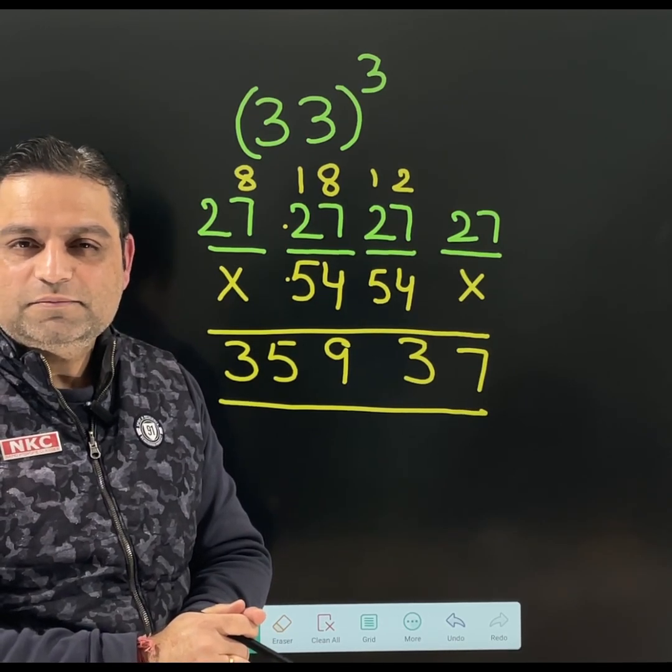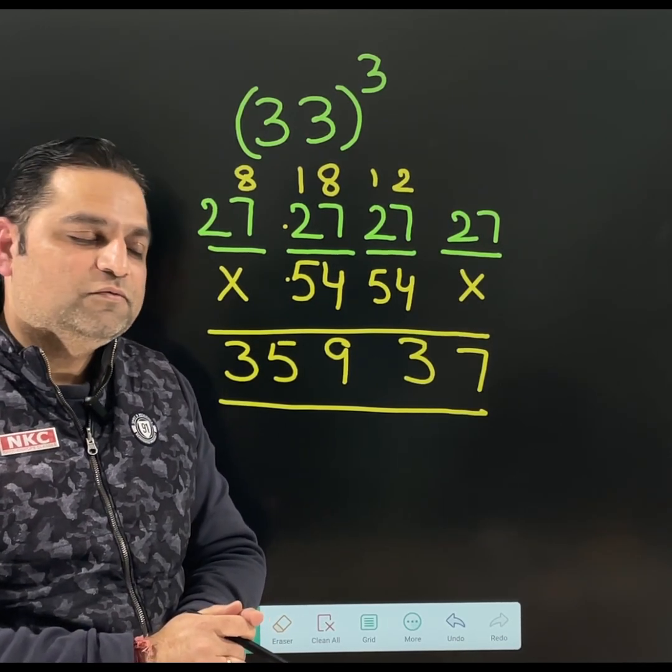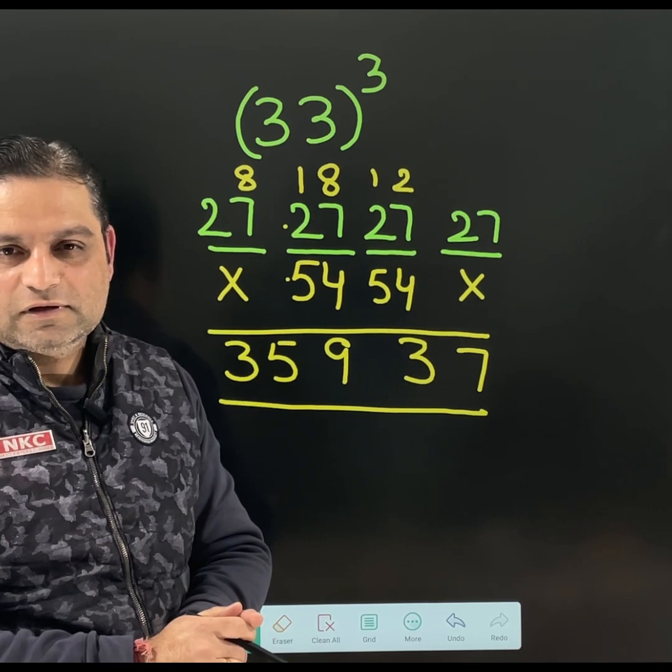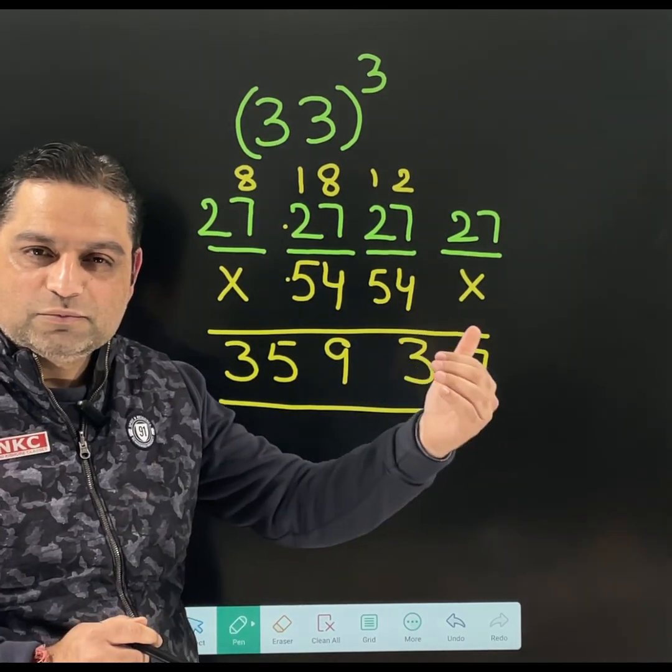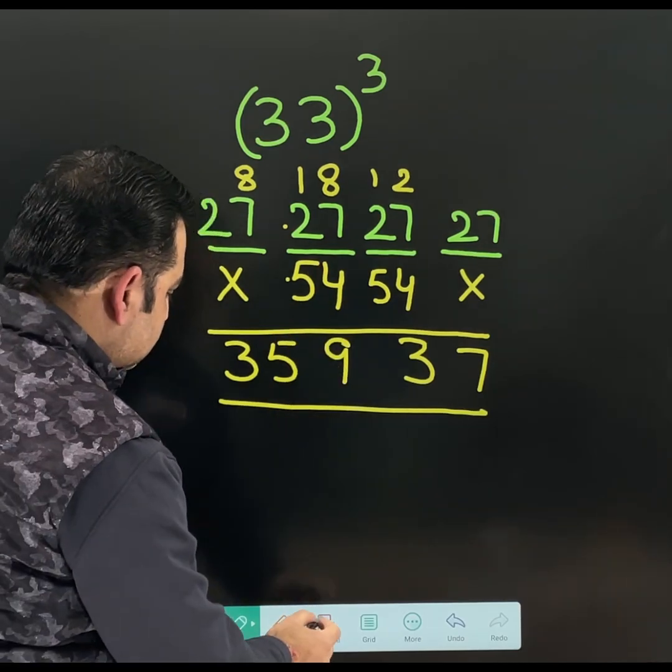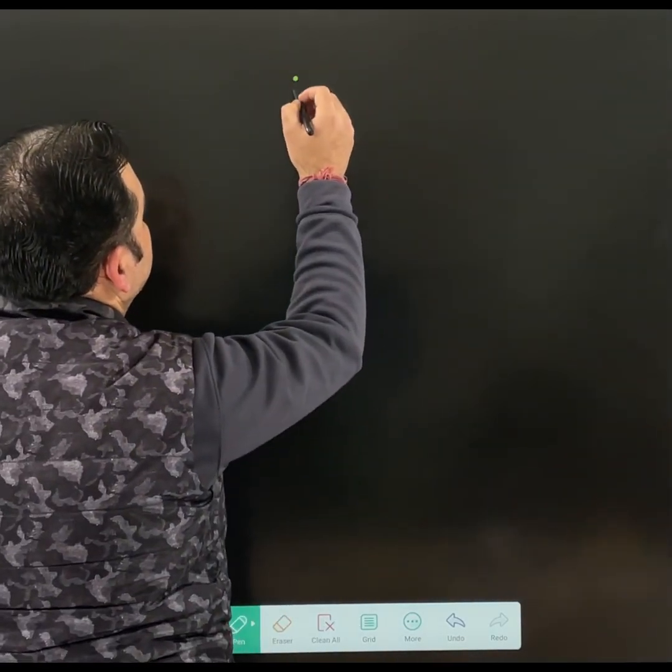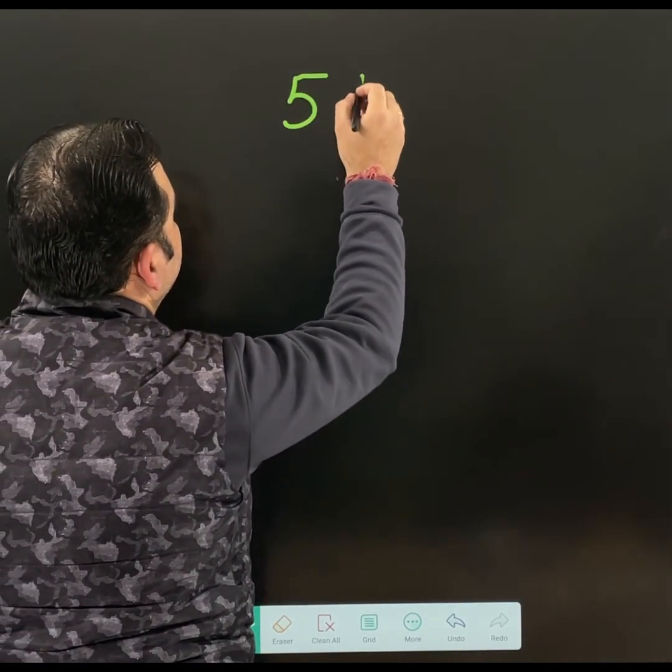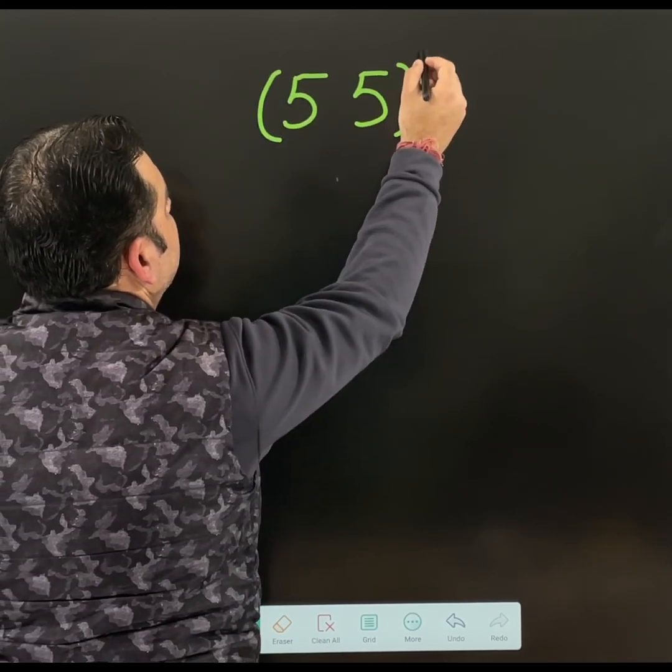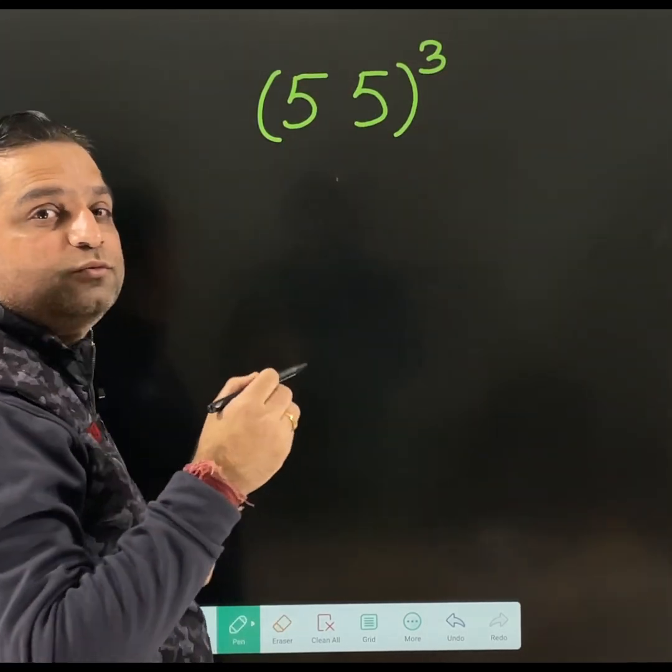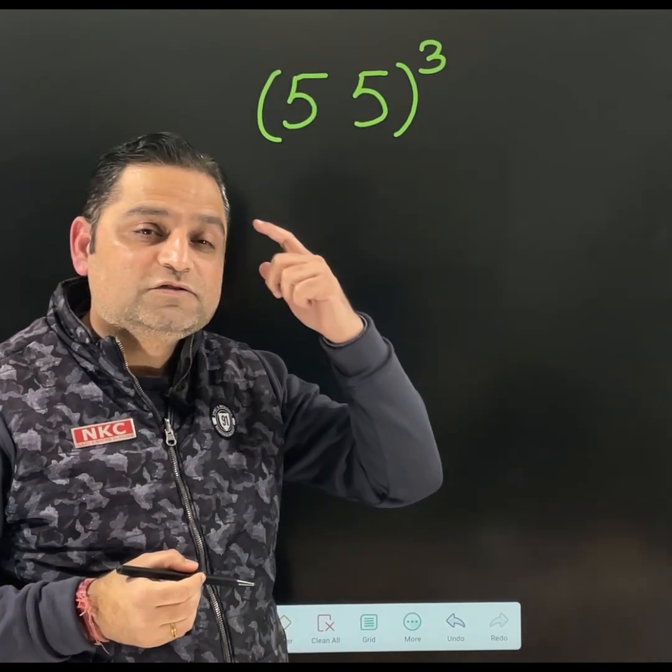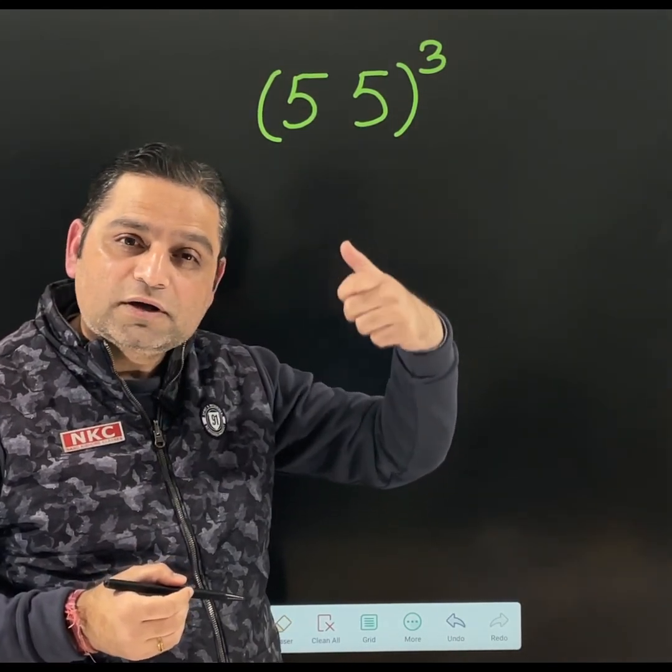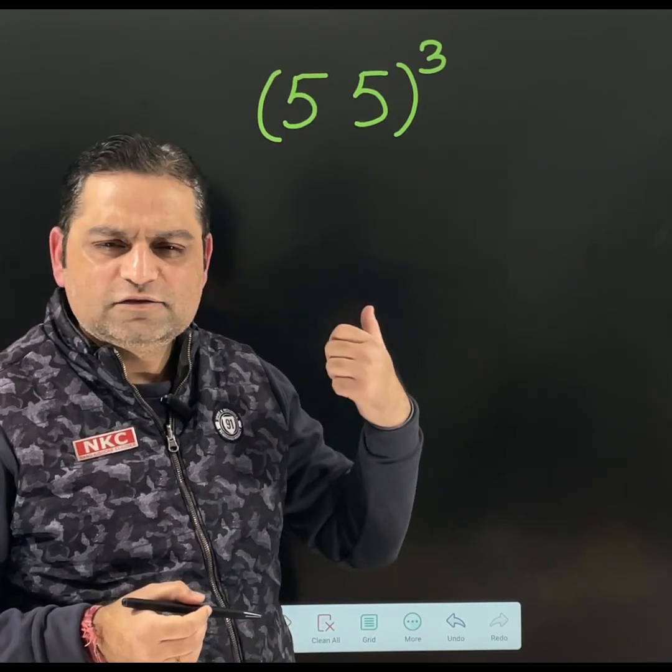I hope you are clear with this concept. One more example we will do. Because I know many questions would be going on in your mind. How next number would be done. Let us do one more question. That question is 55 cube. Because 5 cube is a 3 digit number. And you must be thinking that for 3 digit number, how the calculations will be done.